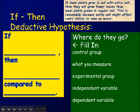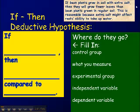We're going to read this hypothesis sentence example shown on the upper right: 'If bean plants grow in soil with extra salt, then they will grow fewer leaves than bean plants grown in regular soil. This is reasonable because extra salt might affect roots' ability to take up water.' We're going to figure out which is the control group, what we're measuring as an effect, what is the experimental group, what's the independent variable, and what's the dependent variable, and put those elements into our yellow if-then-compared-to structure.